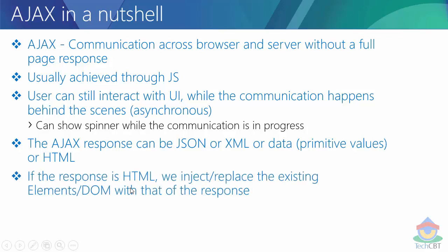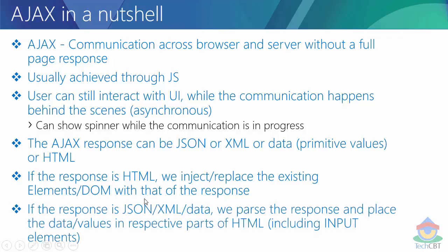The Ajax response — the partial page response — can always be returning either JSON, XML, data, or even HTML. If the response is some kind of HTML element but not full blown HTML tags or body, those elements received from the server will be injected or replaced as part of existing elements in the DOM. If the response is in the form of JSON, XML, or data, we parse that response and place those values into the respective parts of HTML, which includes input elements.